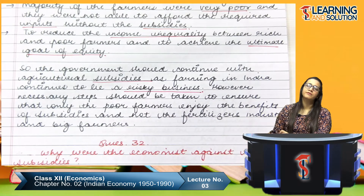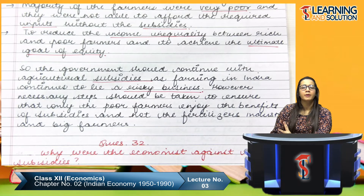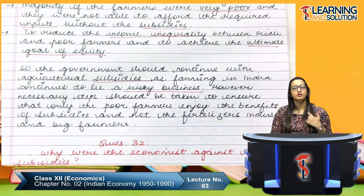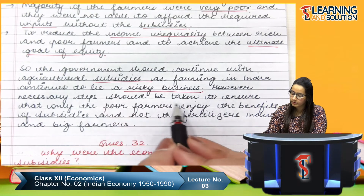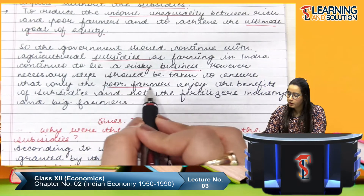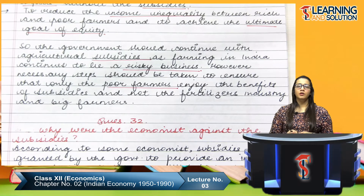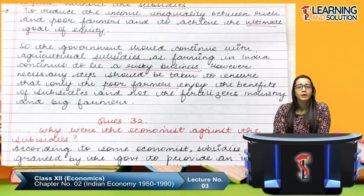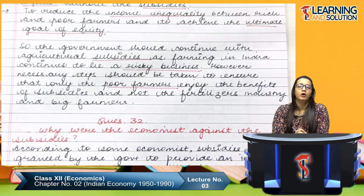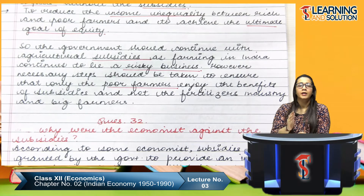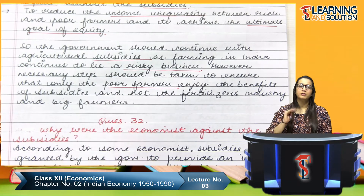However, necessary steps should be taken to ensure that only the poor farmers enjoy the benefit of subsidies and not the fertilizer industry and big farmers. The government had to make sure subsidies served their intended purpose. Some economists were against subsidies because the benefits were going more to the fertilizer industry and big farmers than to poor farmers.